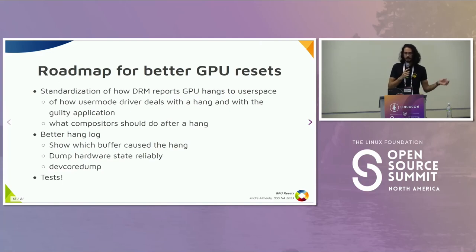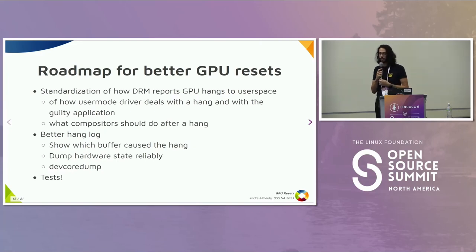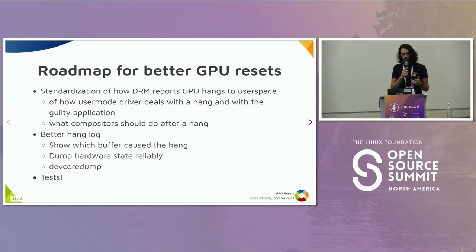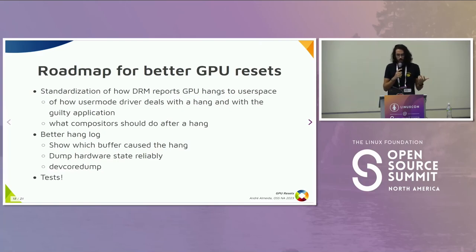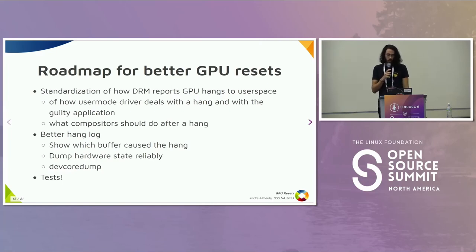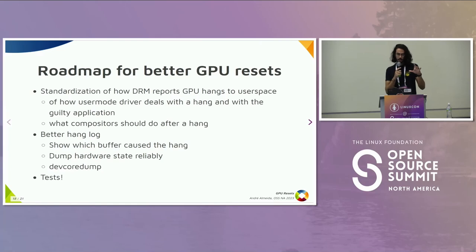Basically, the roadmap to have better GPU resets on the Linux stack is to have a standardization of how DRM reports GPU hangs to user space, and a standardization of how user-mode drivers deal with that and what the compositor should do after reset. We also need better hang logging to find somehow which buffer caused the hang. Because the GPU firmware can have total control of the device memory, we can't be sure of what's going on and can't rely on the registers. There's also an API called dev core dump in the Linux kernel that you can use to dump information when the module crashes — it's not widely used right now, but if every GPU vendor starts using it, we can have a standard way to have a text file to send to distros and developers.